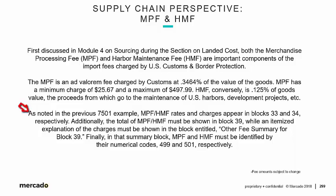As noted in the previous 7501 example we just talked about, MPF and HMF rates and charges appear in Blocks 33 and 34 respectively. Additionally, the total of MPF and HMF must be shown in Block 39, while an itemized explanation of the charges must be shown in the block entitled 'Other Fee Summary for Block 39.' In that summary block, MPF and HMF must be identified by their numerical codes, which are 499 and 501 respectively.